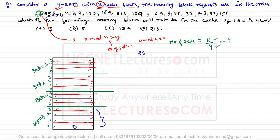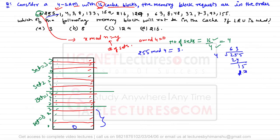Next, 255 mod 4 = 3, so 255 is placed in set number 3. Then block 1 goes to set number 1. Block 4 goes to set number 0 (4 mod 4 = 0). Block 3 goes to set number 3 (3 mod 4 = 3). Block 8 goes to set number 0 (8 mod 4 = 0).